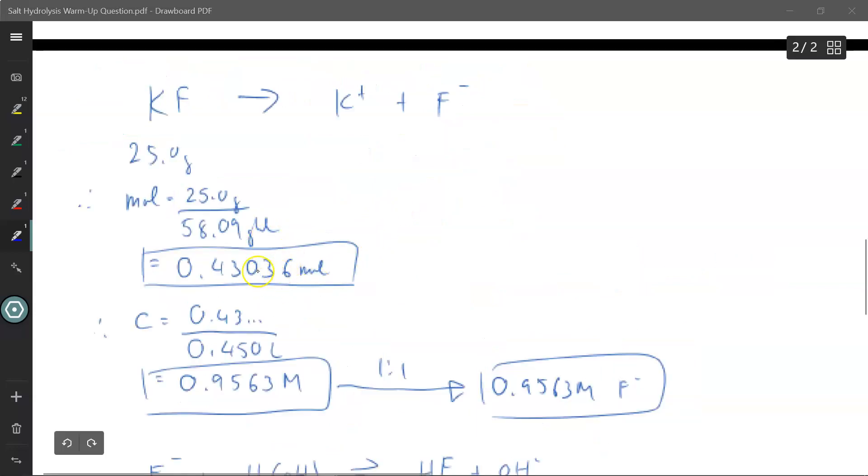Alright, so the first thing I'm going to do is find out what is the concentration of potassium and fluorine ions floating around my solution so I can undergo salt hydrolysis. So I said 25 grams of potassium fluoride. The molar mass of KF is 58.09 grams per mole. That gives me 0.43036 moles of potassium fluoride.